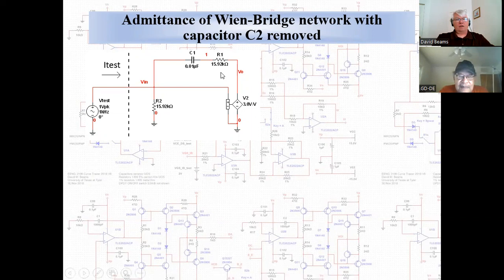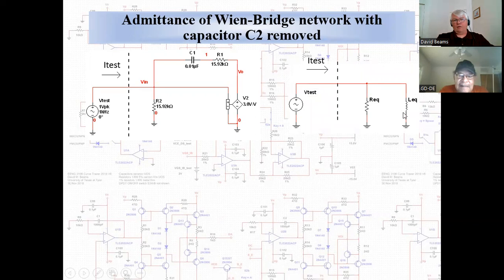Now let's apply negative resistance to the Wien bridge. I'll take out capacitor C2 and find the admittance of the remainder of the network, then resolve it into a parallel resistance and a parallel inductance.